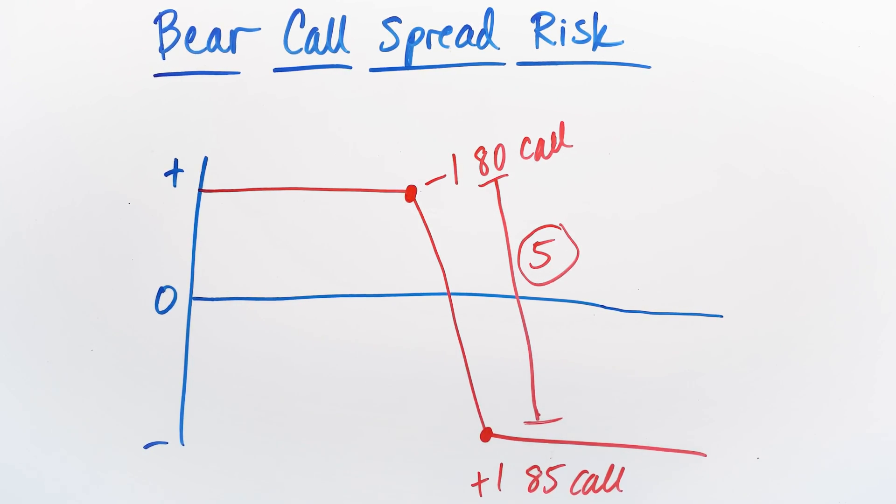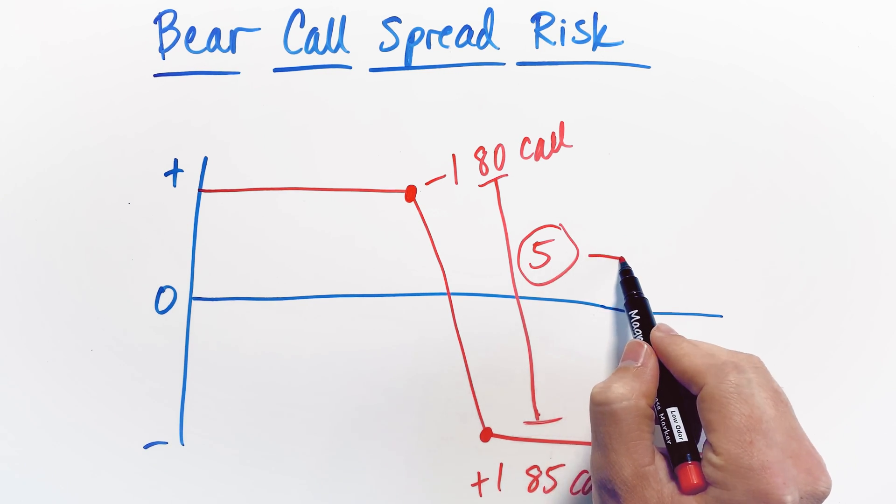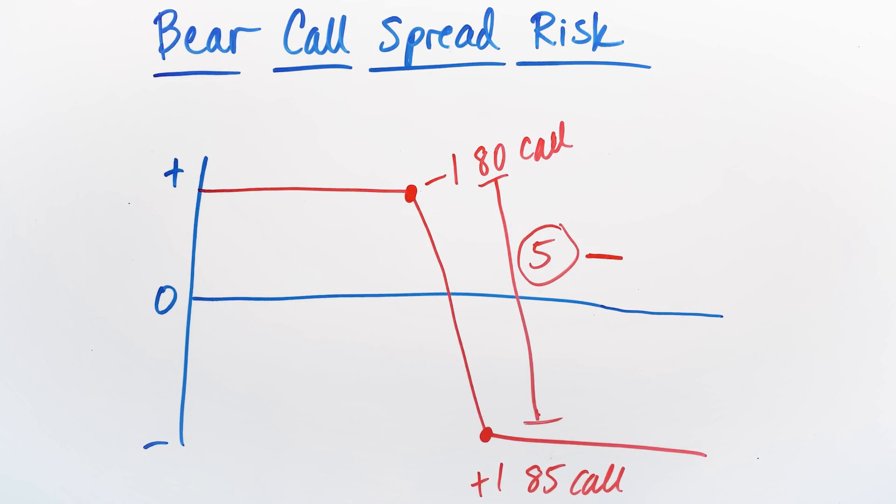So if we had never collected any premium at all, we know that the maximum spread width and therefore the maximum starting risk that we have is simply the difference between the spread, which is $5. However, we did collect a premium from selling this option spread. So when you sell a bear call spread, you collect a credit. And that is what we are going to use to subtract and reduce our risk is that credit that we received from entering into this position.